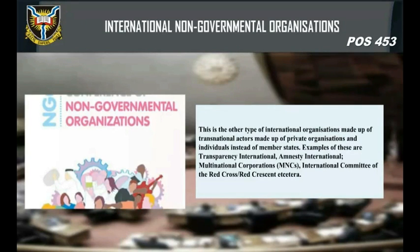International non-governmental organizations (INGOs) are the other type of international organizations, made up of transnational actors — private organizations and individuals instead of member states. Examples include Transparency International, Amnesty International, Multinational Corporations (MNCs), the International Committee of the Red Cross, and the Red Crescent.